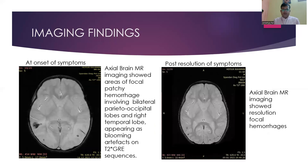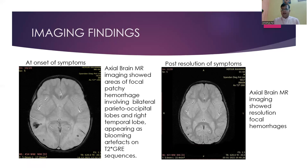Now coming to T2-GRE sequences taken during the scan. In the T2-GRE sequence at the onset of symptoms, axial brain MR imaging showed areas of focal patchy hemorrhages involving bilateral parietal and occipital lobes and right temporal lobe, appearing as blooming artifact on the T2-GRE sequence. Whereas on post-resolution of symptoms, the MRI showed resolution of the focal hemorrhages that were seen earlier.